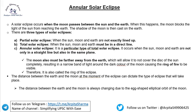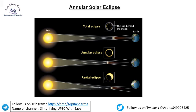Then we have the annular eclipse and the total eclipse. A total solar eclipse means when the sun, moon and earth are in a direct line. An annular solar eclipse is a particular type where they are not only in a straight line but also in the same plane, and the moon must be farther away from the earth so it does not cover the disk of the sun completely. So some part of the sun remains visible.